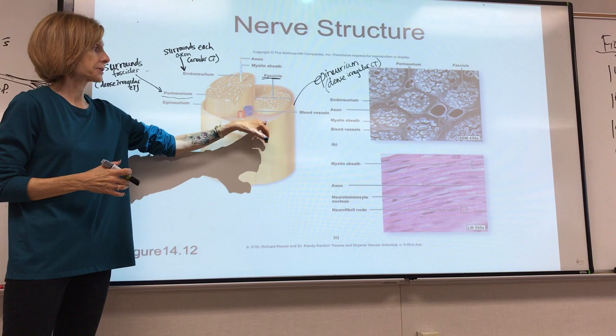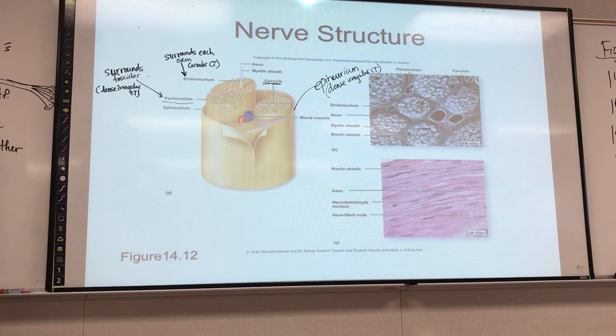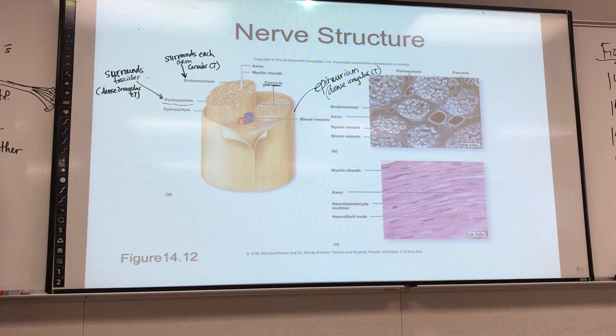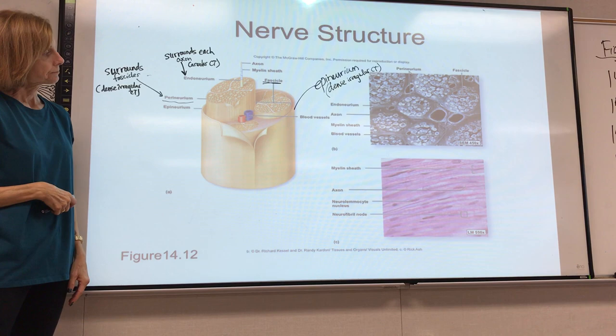The nerve will usually have its own blood supply. Sometimes you'll see some adipose tissue between the fascicles. They can actually be very large — the largest nerve in the body, the sciatic nerve, is about a half inch in diameter. So they can be pretty large and carry a bunch of axons.